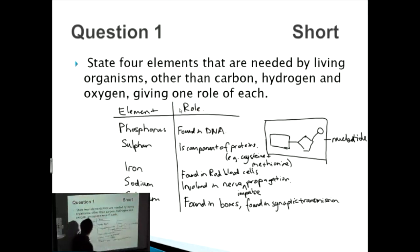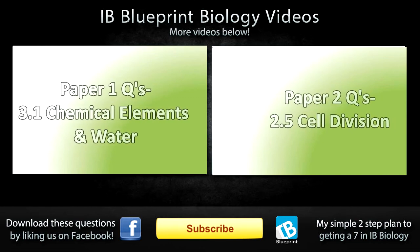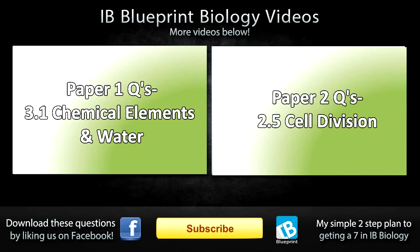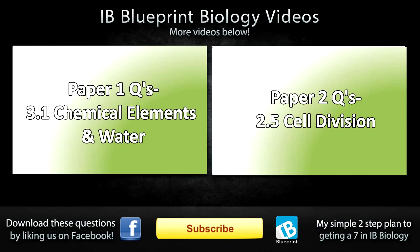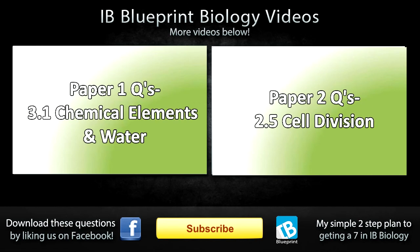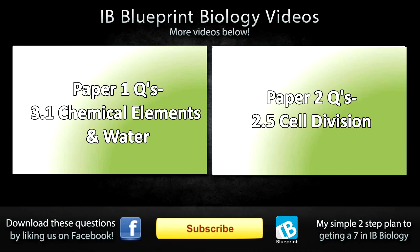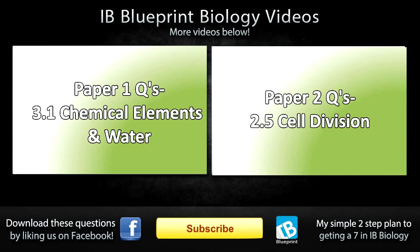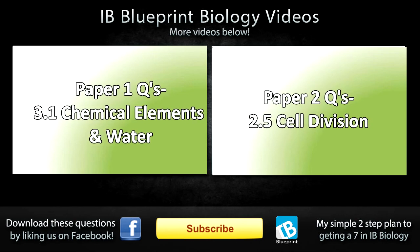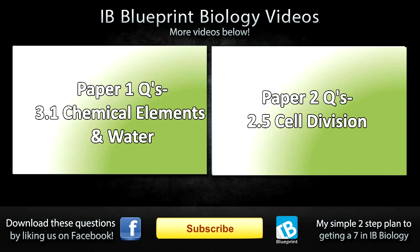There you go, so there's five, and you can select any of those four. These are probably the easiest ones to remember, and if you can do that, then you'll easily get full marks on a short question. There are plenty more YouTube videos for you to check out - just click on the links below. If you'd like to download the questions as well as the answers, make sure to like us on Facebook first. And finally, if you'd like to find out how I got a seven in high-level IB biology, make sure to check out our website in the bottom right hand corner. Thanks!